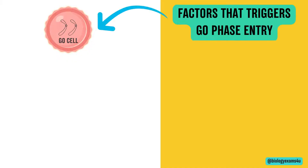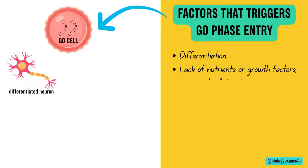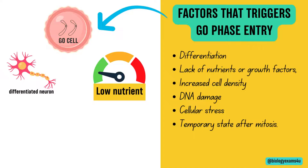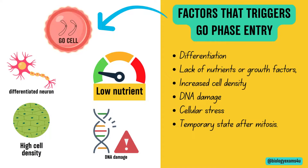Now let us see what factors actually trigger cells to enter into the G0 phase. Cells enter G0 phase due to differentiation — in the case of neurons and cardiac cells, once differentiated, the cells enter G0 phase. Lack of nutrients or growth factors can also cause entry into G0; when these become available, the cell will re-enter G1 phase. Increased cell density leading to contact inhibition is a third factor — once a cell is in contact with neighboring cells from all sides, there is a natural tendency to enter G0 state. Additionally, DNA damage or cellular stress can force a cell into G0 for DNA repair.